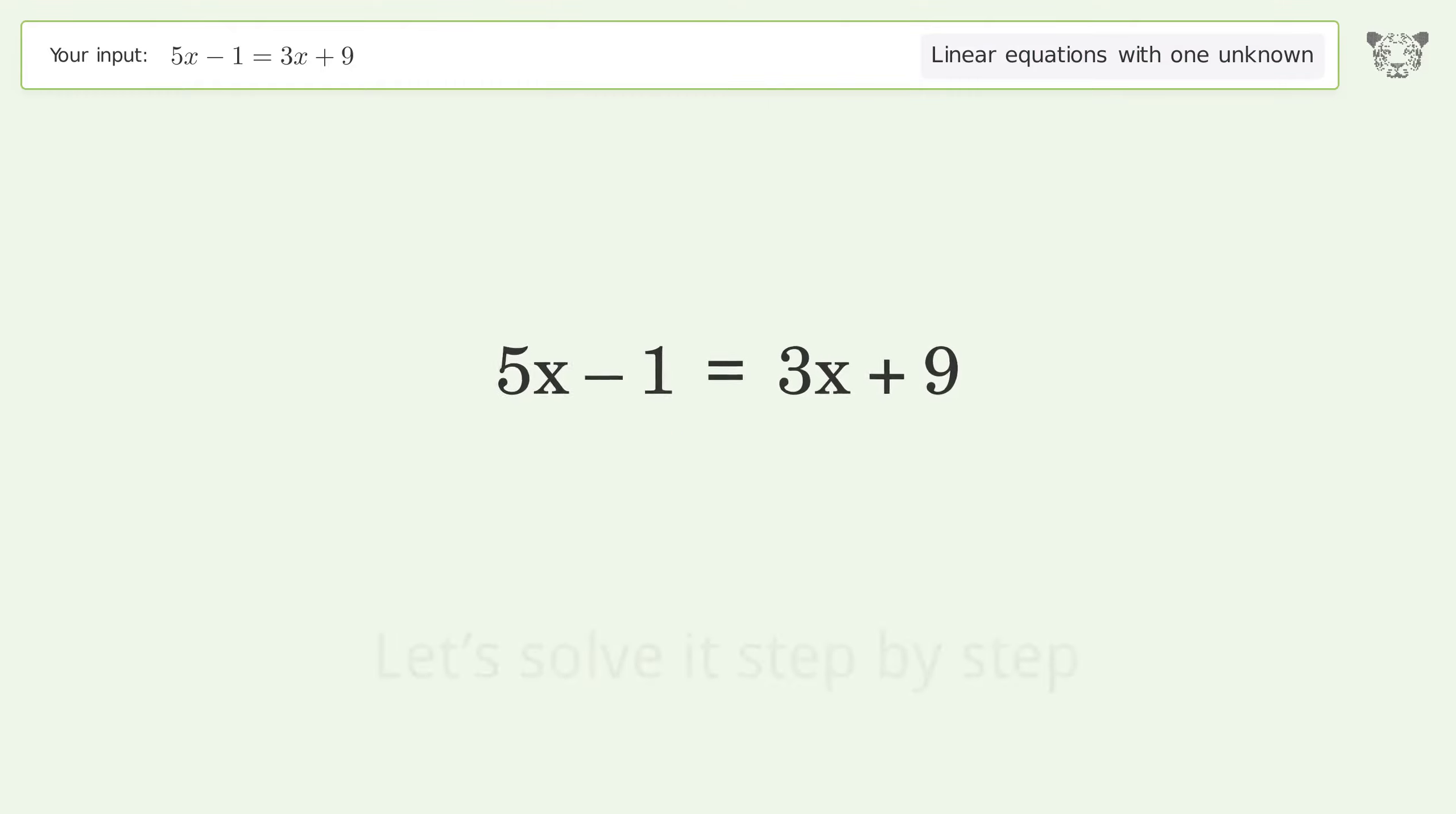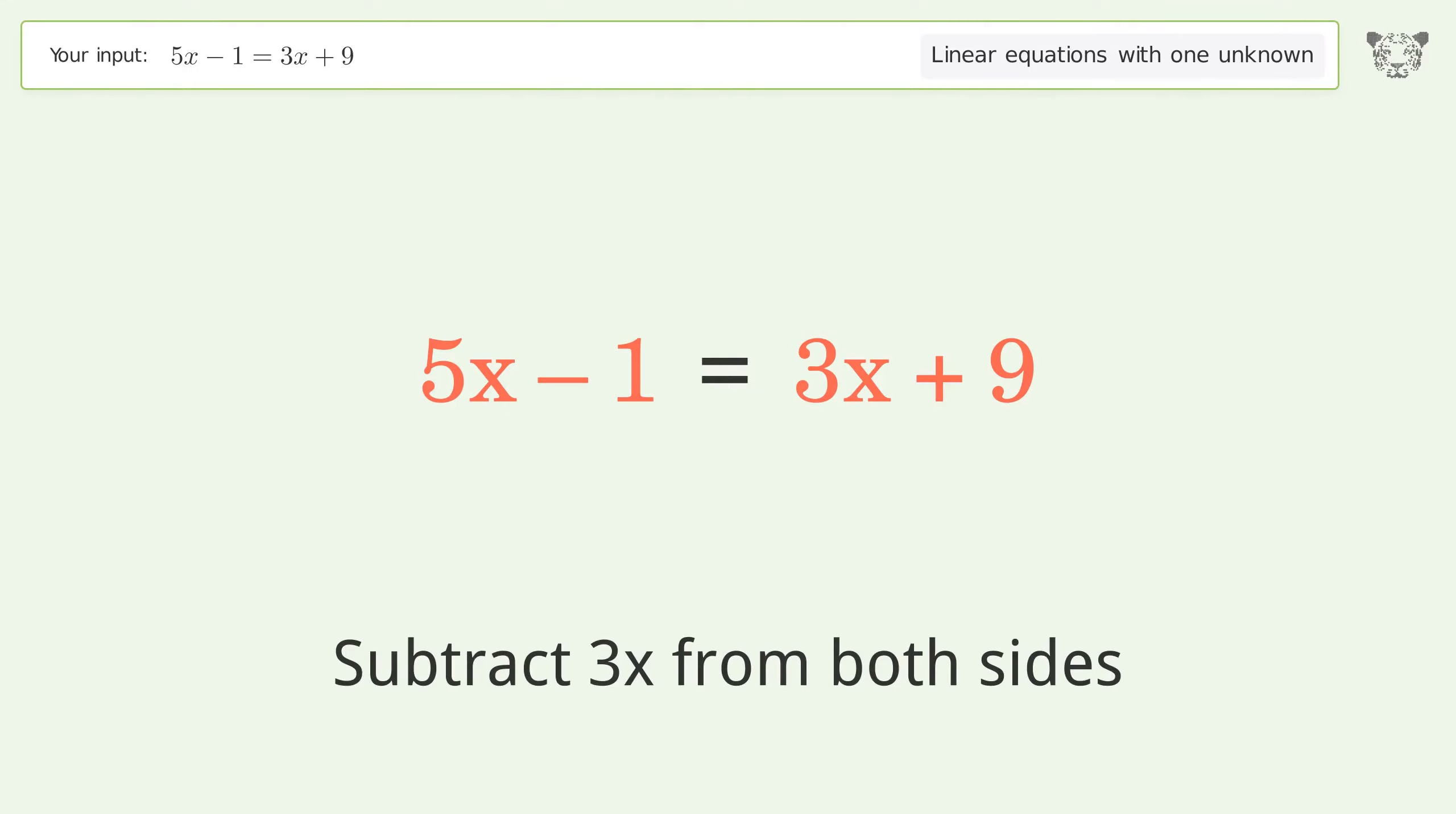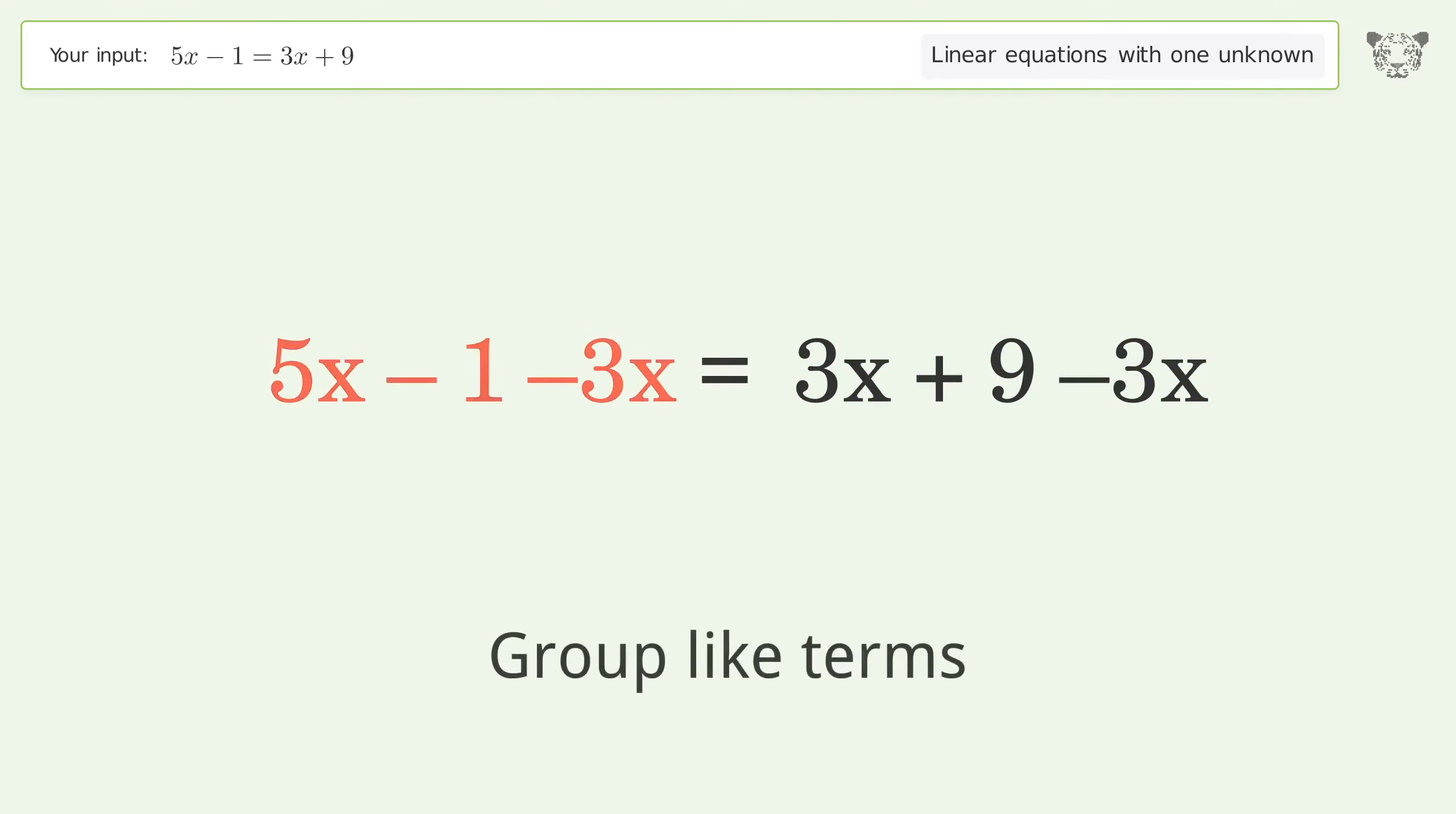Let's solve it step by step. Group all x terms on the left side of the equation. Subtract 3x from both sides. Group like terms.